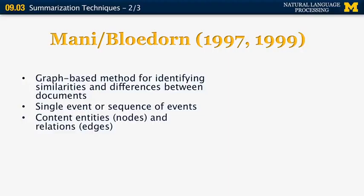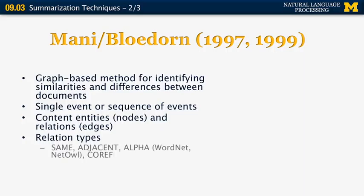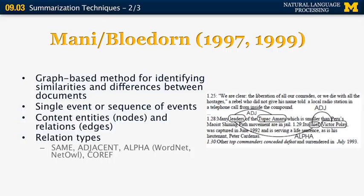The nodes in the document are entities and the relations correspond to edges. There are different relation types — for example, 'same' when the entity is the same, 'adjacent' when it appears near each other, 'alpha' which is related to semantics in WordNet, and 'coref' when the two are coreferent. Here's an example: we have an entity called 'leaders', another called 'Tupac Amaru', connected by adjacency. 'Chief' and 'Victor Poli' are connected by adjacency. 'Chief' and 'leader' are connected by an alpha relation type, and so on.